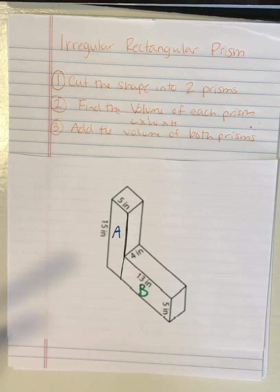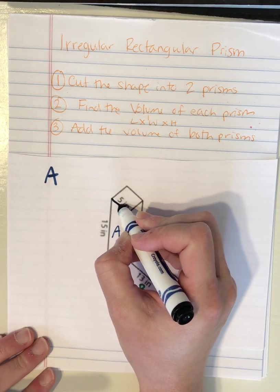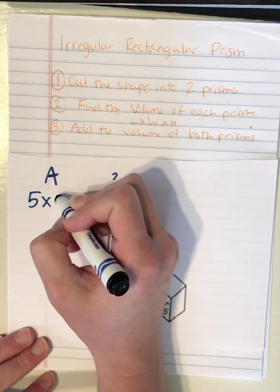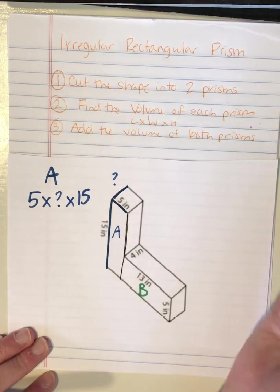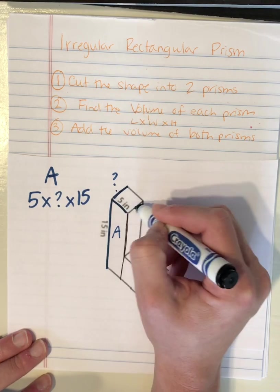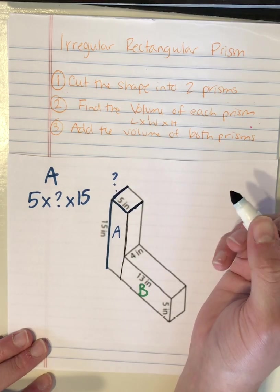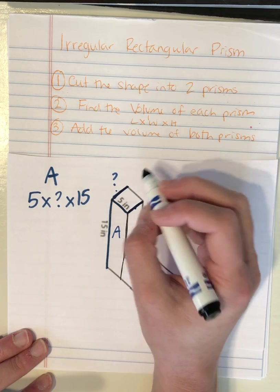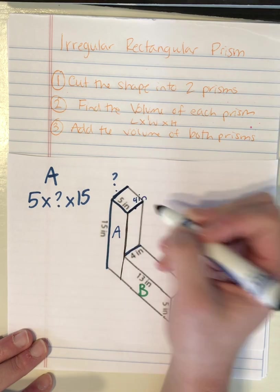So for step two I'm gonna find the volume of each. So let's take a look at A. I know that this is 5. I'm not quite sure what this length is and I know that this is 15. So I'm gonna analyze my shape to see if there's another number that lets me know how long this side is. Now if you look down here, if this side of our rectangle is 4 inches that lets me know the opposite side is going to be the same which is 4 inches.